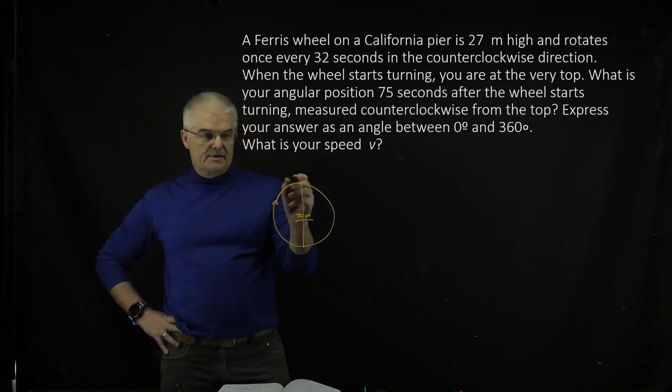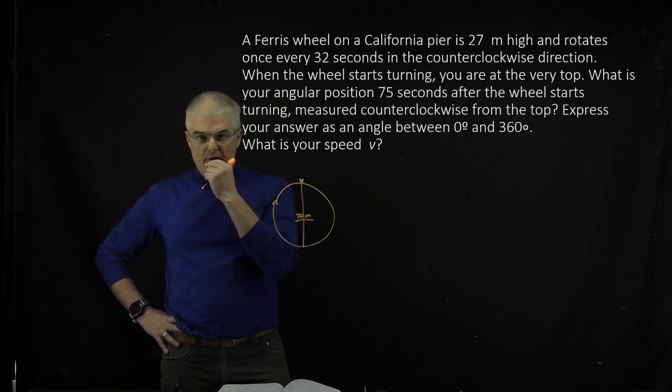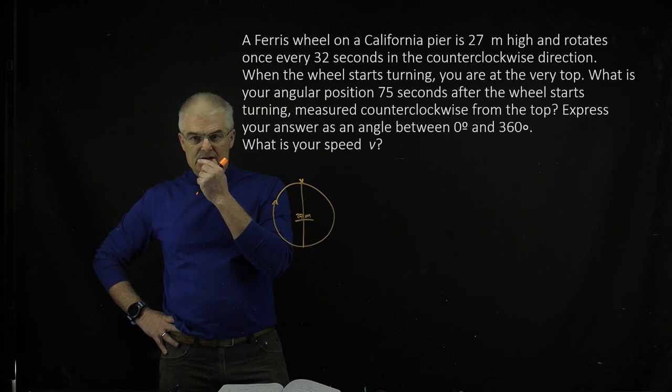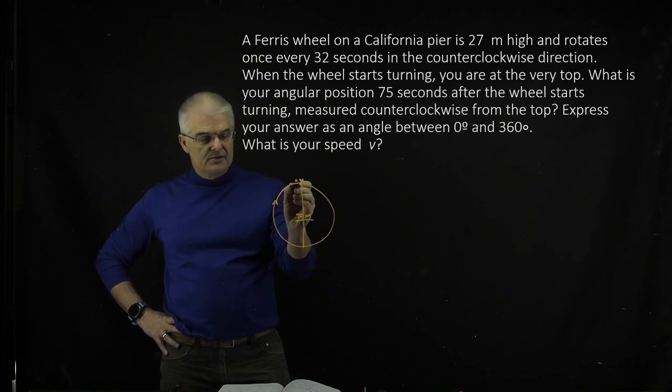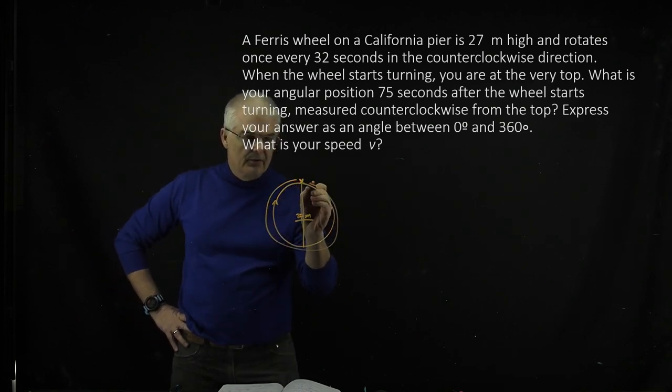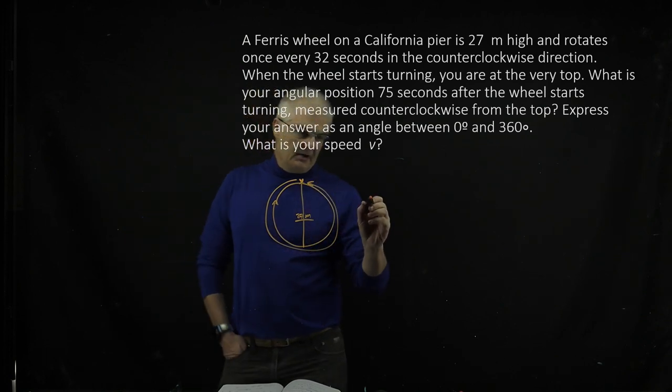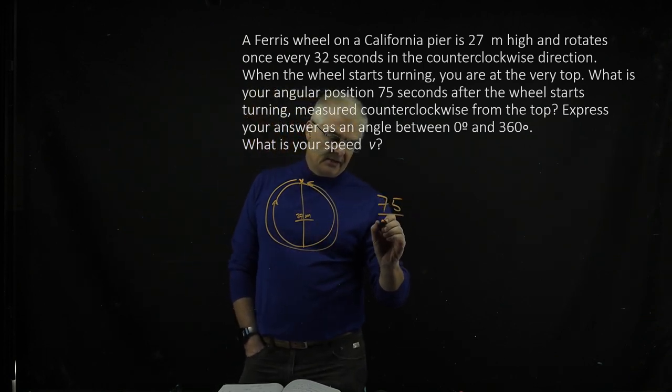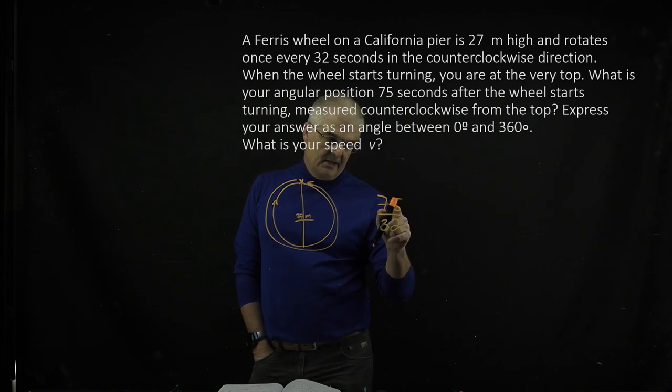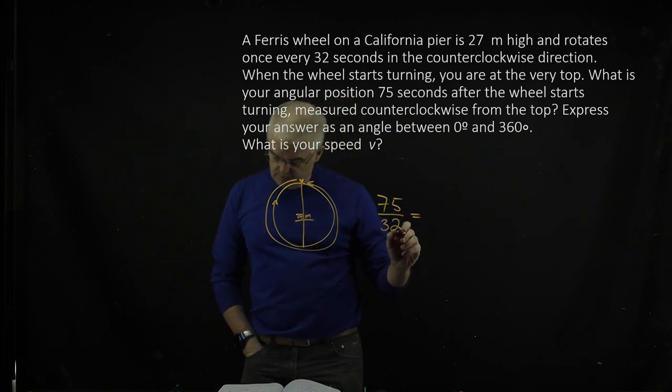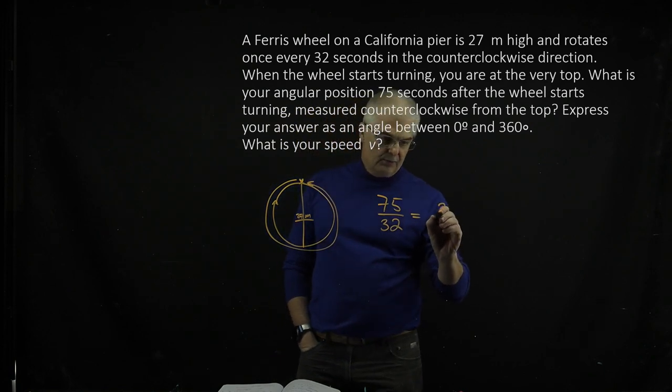And you're on the top, here, and your angular position's 75 seconds. What do we know? It also takes 32 seconds for you to do one rotation. So if you think about it, you're traveling 75 seconds, how many rotations are you going to get? It's going to be 75 over 32, which gives me 2.34 revolutions.